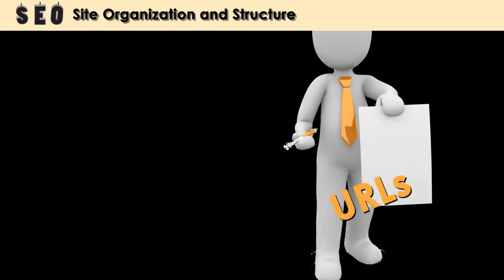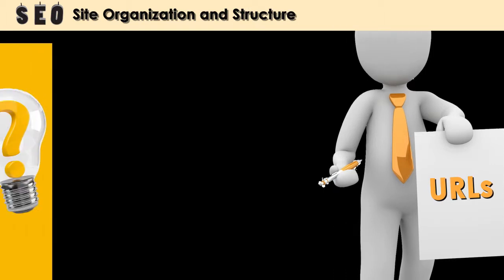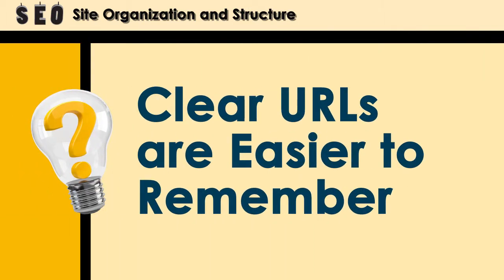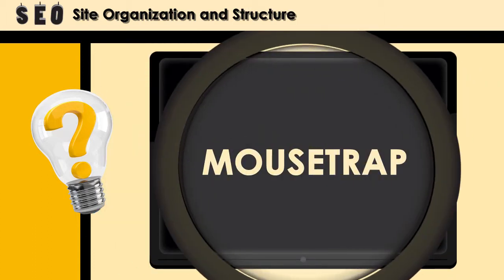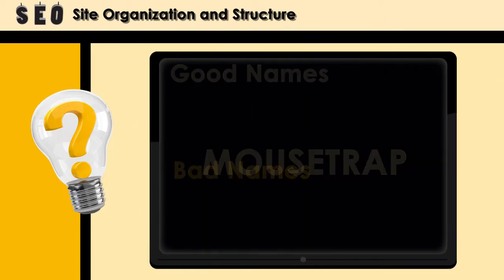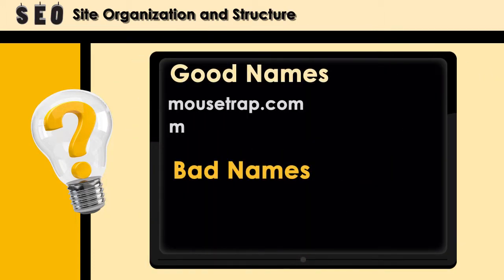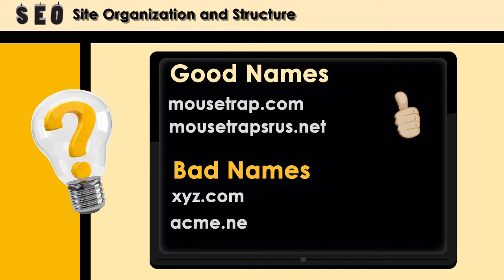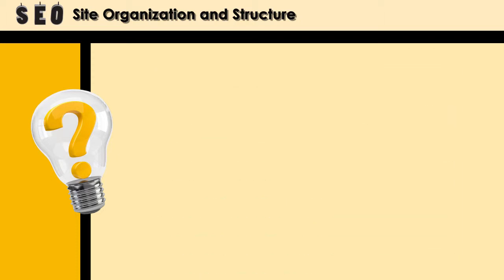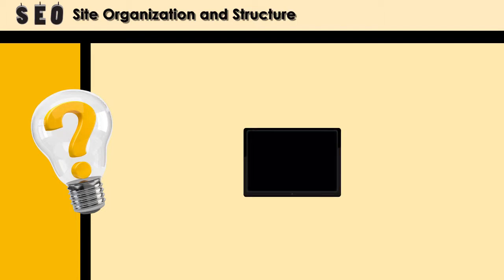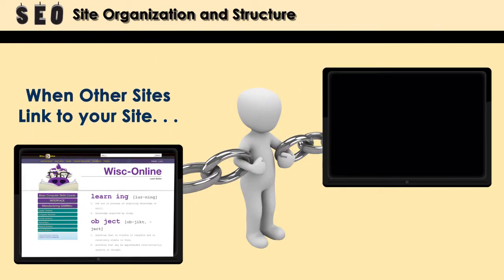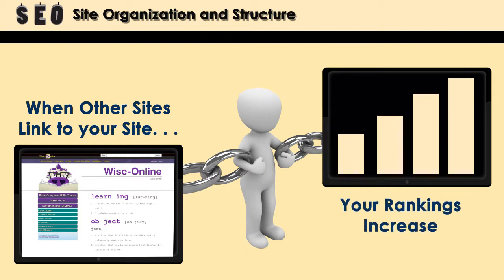Why is it so important to have a clear URL? One obvious reason is that the clearer the URL, the easier it is to remember. That alone could help bring users to your site. Say you were looking for a mousetrap — wouldn't it be easier for you and the search engines to find a business called mousetrap.com or mousetrapsrs.net, rather than xyz.com or acme.net? Providing a descriptive URL that includes keywords specific to your site promotes better crawling by search engines. Descriptive URLs also increase the opportunity for other sites to link to your site, which increases your rankings.